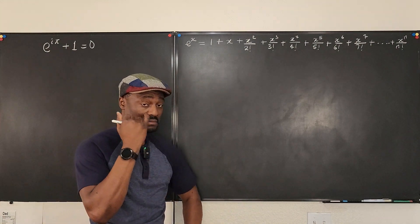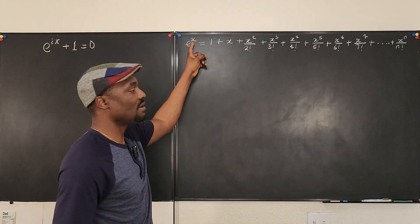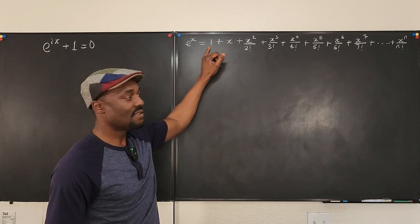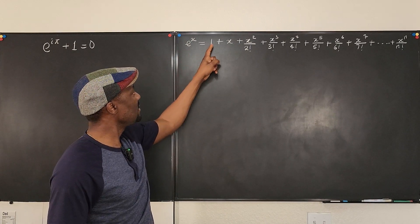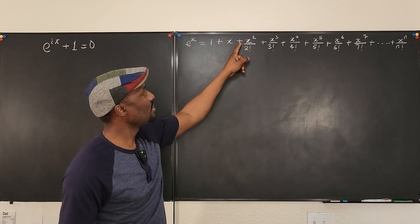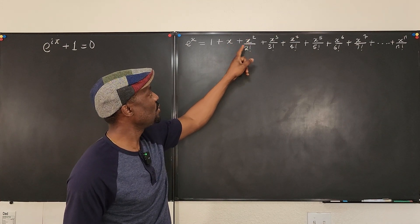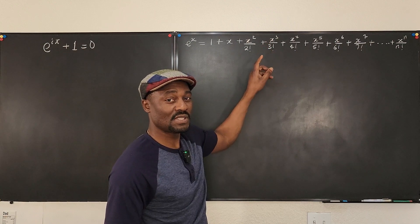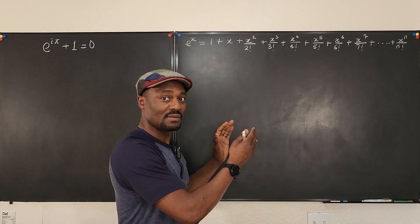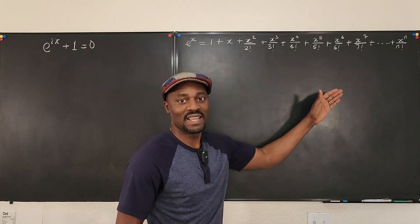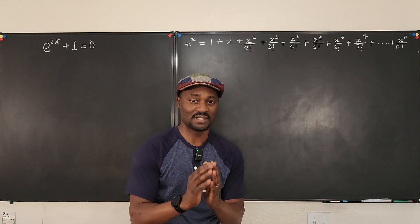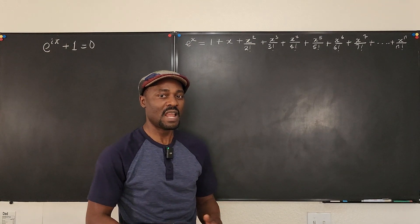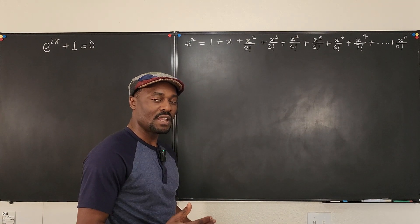So if I wanted to find e to the zero, I just plug in zero for all the x's — my answer is one. If I want to find e squared, I change x to two: one plus two is three, plus four over two factorial is two, so that's five, plus eight over six is about 1.3, giving about 6.3, and I keep adding to eventually get something like 7-point-something. This approximation gets more accurate the more terms you use.